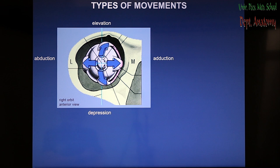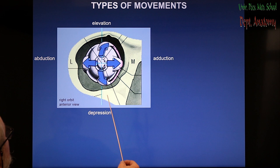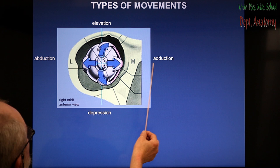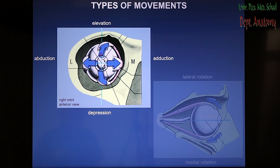Now let's see the movements of the eye. First, the terminology must be clarified. The eye can be lifted — that is called elevation — or depressed, moving down, which is called depression. The medial shift of the eye is called adduction, especially if you consider both eyes together. The opposite movement, the lateral shift of the eye, is called abduction.